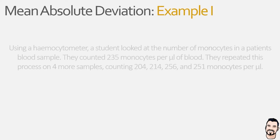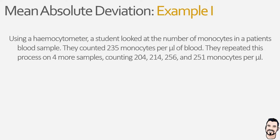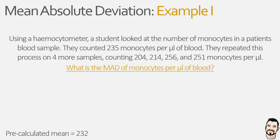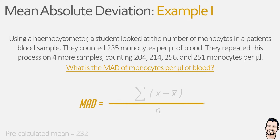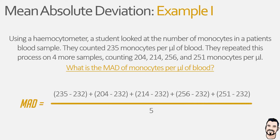In our first example, a student is counting the number of monocytes in a patient's blood sample using a microscope and haemocytometer. During their first count they note 235 monocytes per microliter of blood. To increase accuracy they perform repeat counts on different blood samples from the same patient, noting 204, 214, 256, and 251 monocytes per microliter. The student calculates the mean to be 232 and now wants to know the mean absolute deviation. We populate the equation with the data values minus the mean, repeated for each value, and n equals 5 as there are five data values.